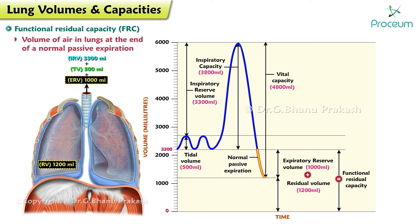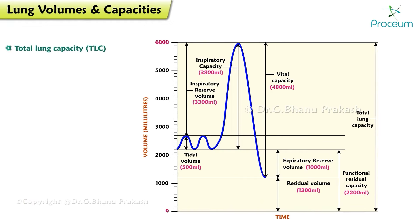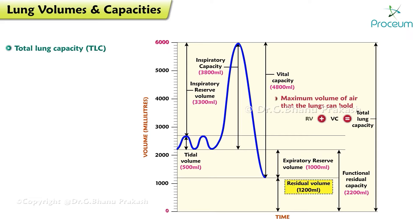Average value for functional residual capacity is 2,200 milliliters. Total lung capacity: the maximum volume of air that the lungs can hold. Total lung capacity is equal to vital capacity plus residual volume. Average value of total lung capacity is 6,000 milliliters.